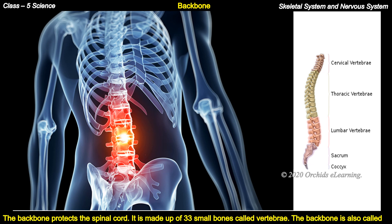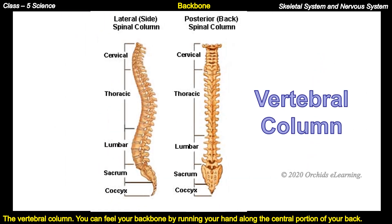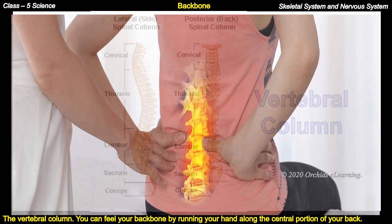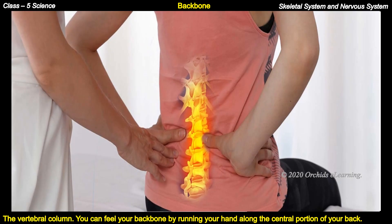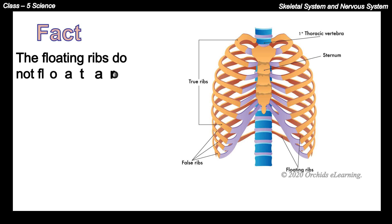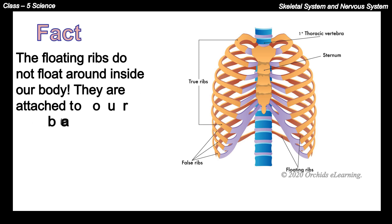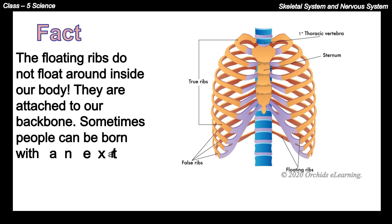Backbone: the backbone protects the spinal cord. It is made up of 33 small bones called vertebrae. The backbone is also called the vertebral column. Fact: the floating ribs do not float around inside our body — they are attached to our backbone. Sometimes people can be born with an extra rib.